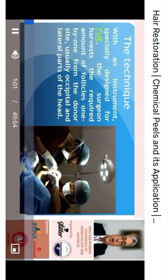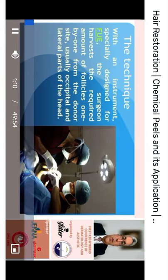With special instruments designed for FUE, the surgeon can harvest the required amounts of follicles one by one from the donor site, which is usually the occipital and lateral parts of the scalp.